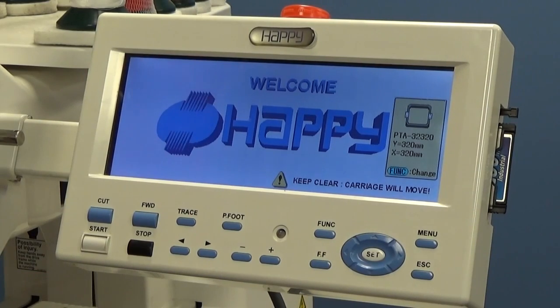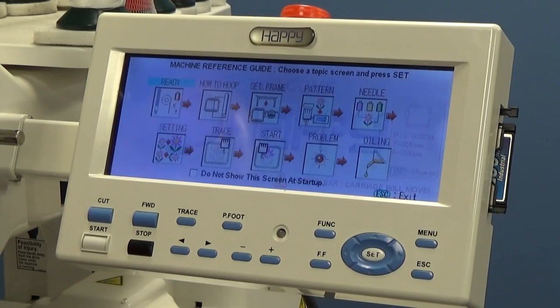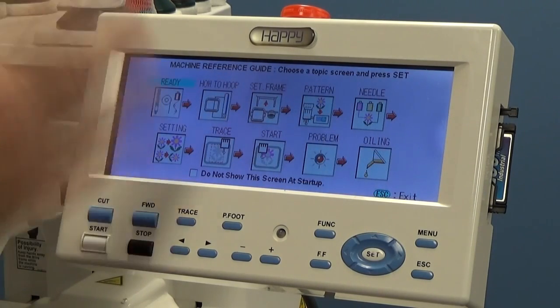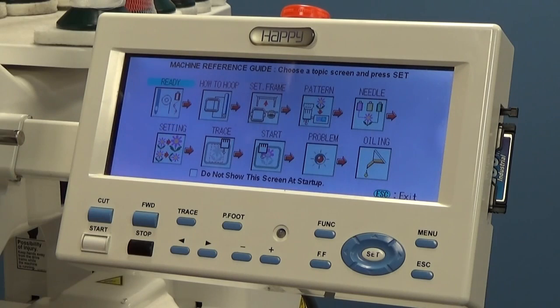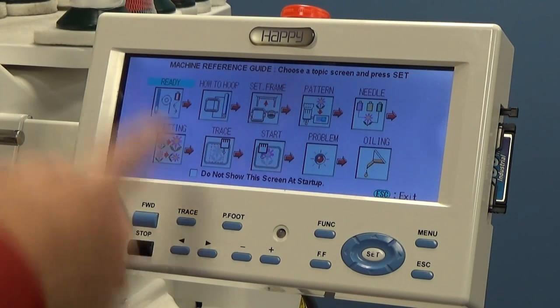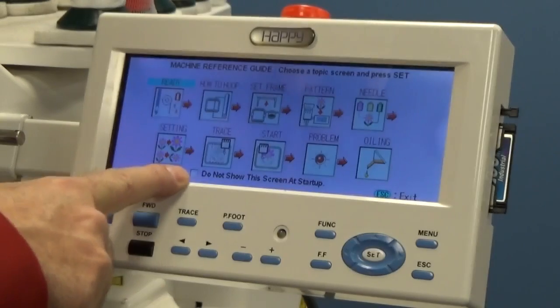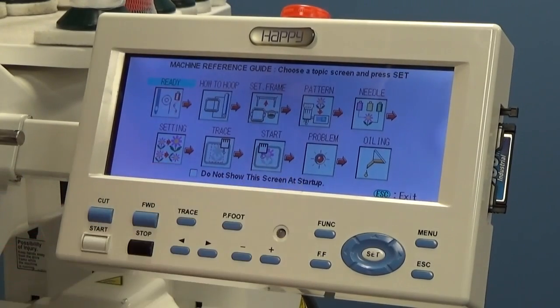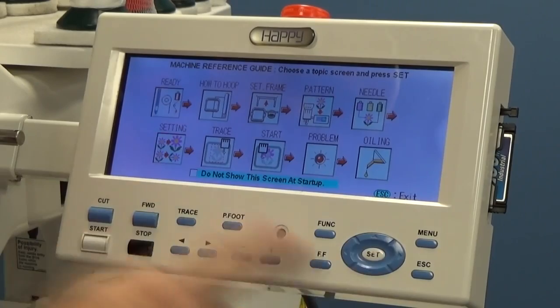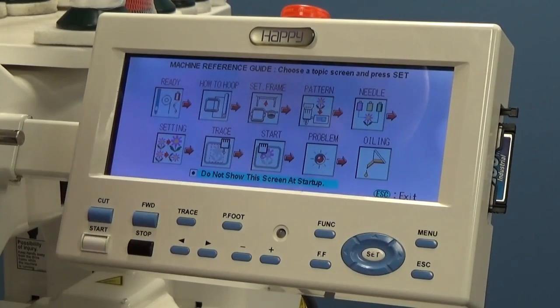Now, when it first boots up, you're going to hit the reference guide again. You may already get that if you have the guide selected for showing at the beginning. So if you want to turn this off, we're going to go to the bottom screen where it says do not show this screen at startup. Put the cursor on it. Press set. You'll see a little black dot in there. Hit escape.